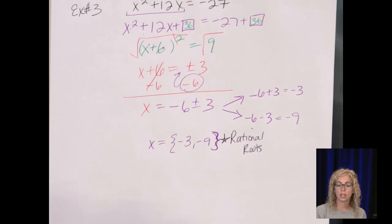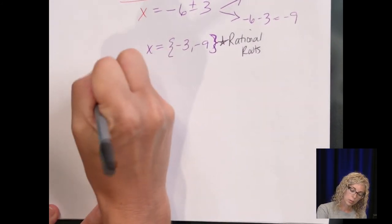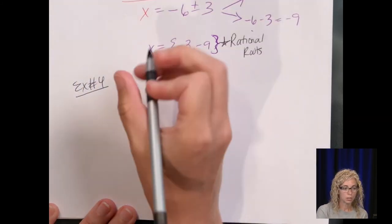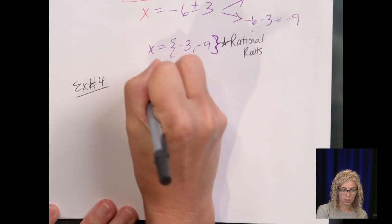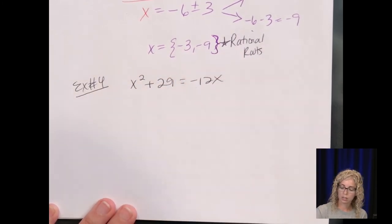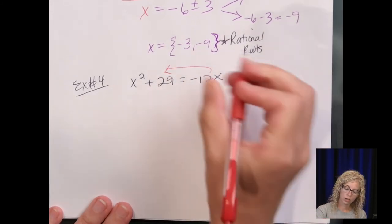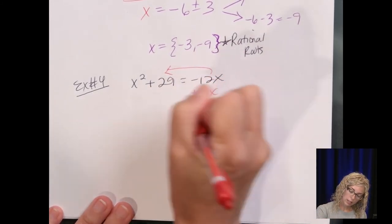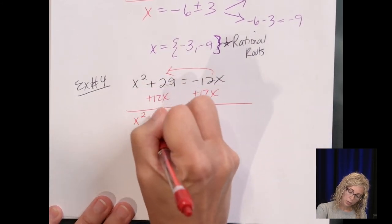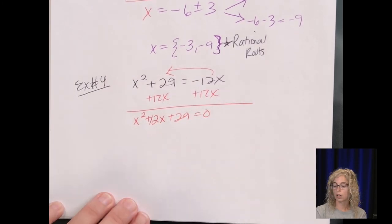Let's take a look at an example with irrational roots. Example number 4. It's x squared plus 29 equals negative 12x. Well, I need the negative 12x over here, so I'm going to add the 12x. So it becomes x squared plus 12x plus 29 equals 0.